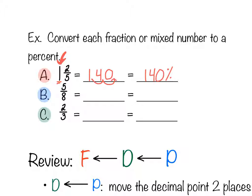In example B, 5/8 — do five divided by eight and you get 0.625. Slide the decimal two spots to the right to convert from decimal to percent, and that makes it 62.5 percent.